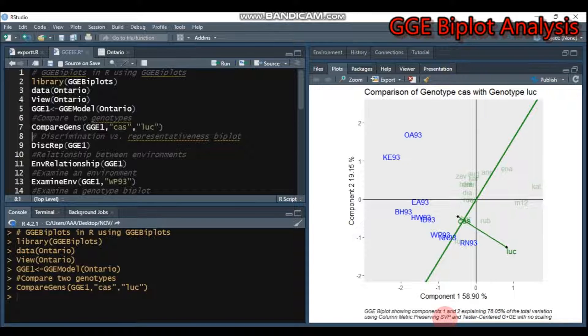You get detailed information like singular value partitioning. The test we're going to use is genotype plus genotype by environment interaction with no scaling. If you assign to one, you are using SVD method with no scaling.